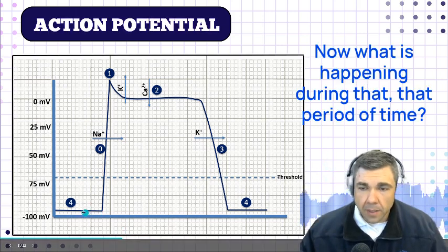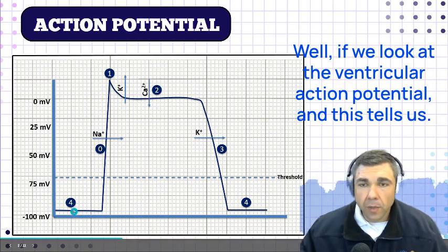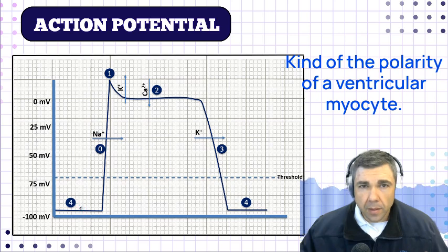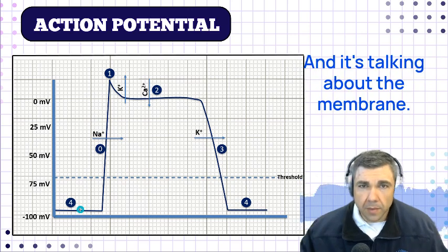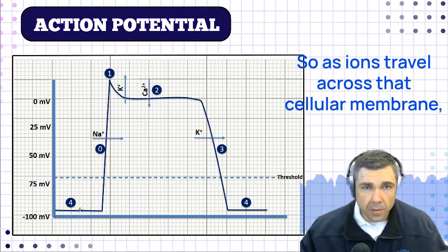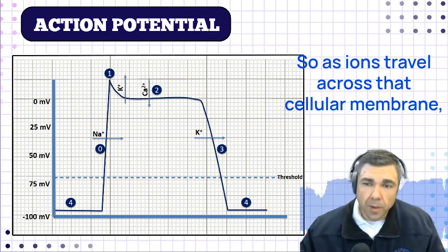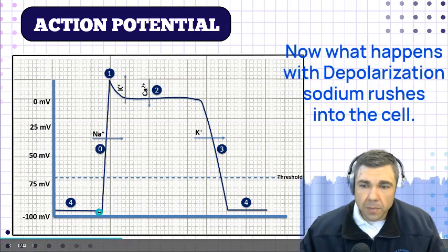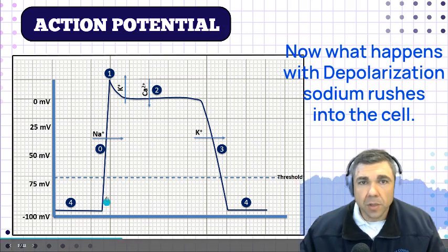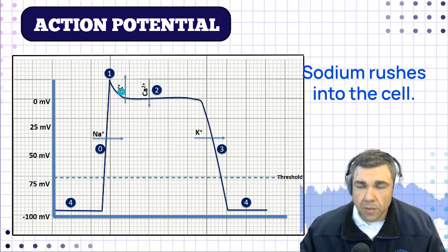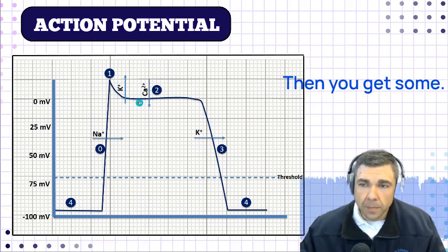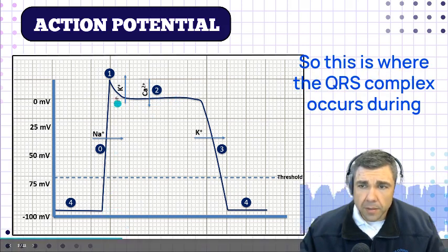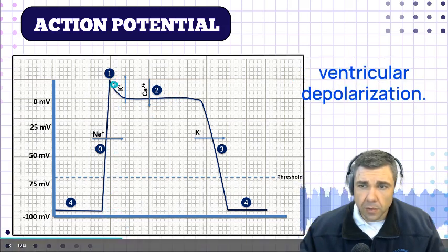What is happening during that period of time? If we look at the ventricular action potential, this tells us the polarity of a ventricular myocyte. It's talking about the membrane — as ions travel across that cellular membrane, it changes the polarity. With ventricular depolarization, sodium rushes into the cell. Then you get a plateau phase. This is where the QRS complex occurs during ventricular depolarization.